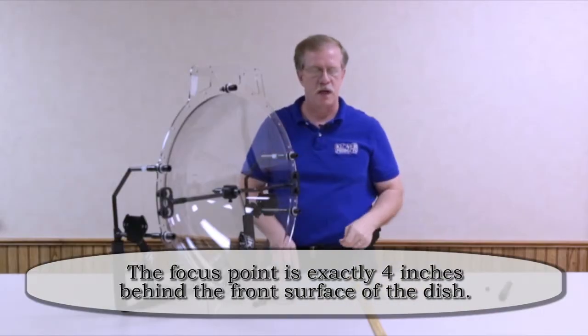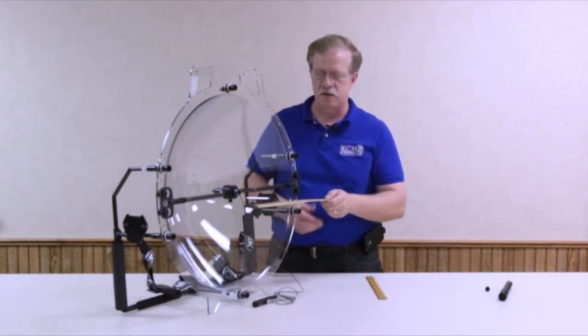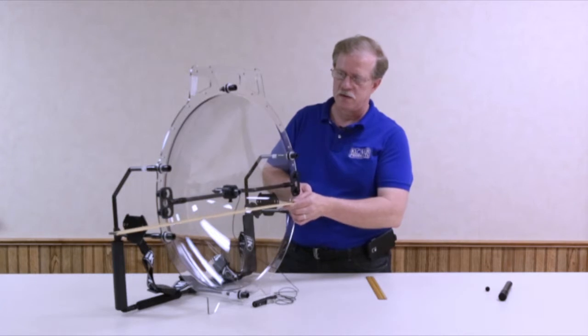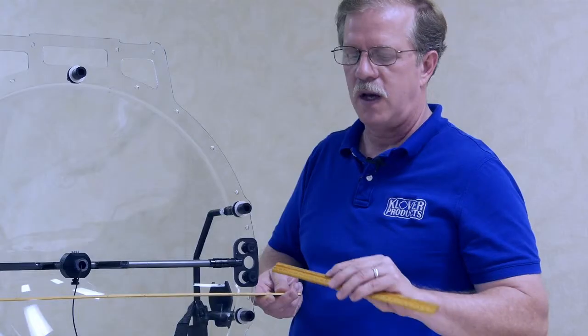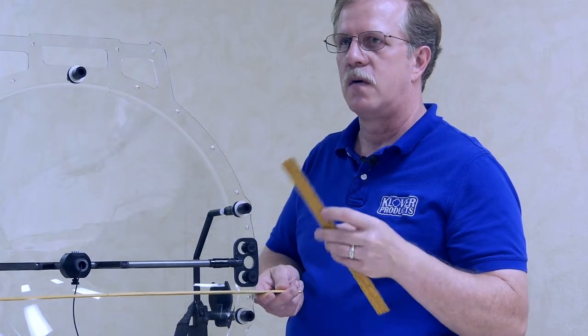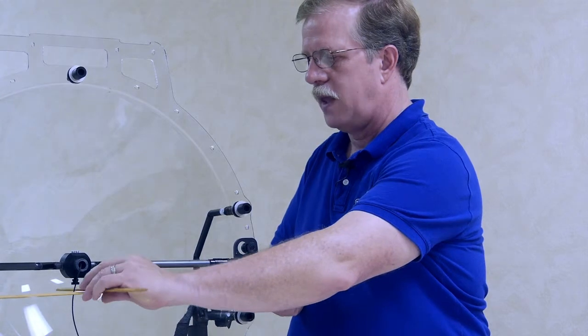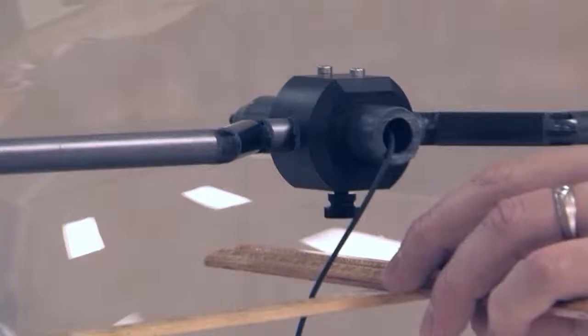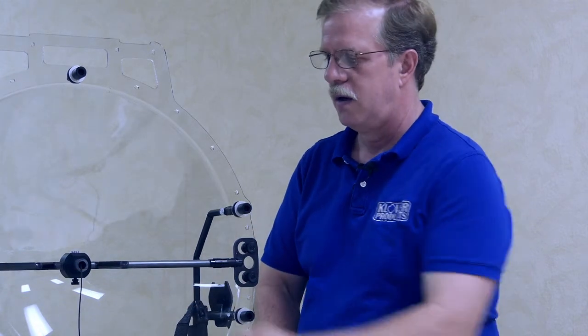Now the most accurate way to focus the microphone is to use a long straight edge and go across the front surface of the dish and then to use a ruler or tape measure and locate that microphone to the tip of your microphone four inches behind that surface.